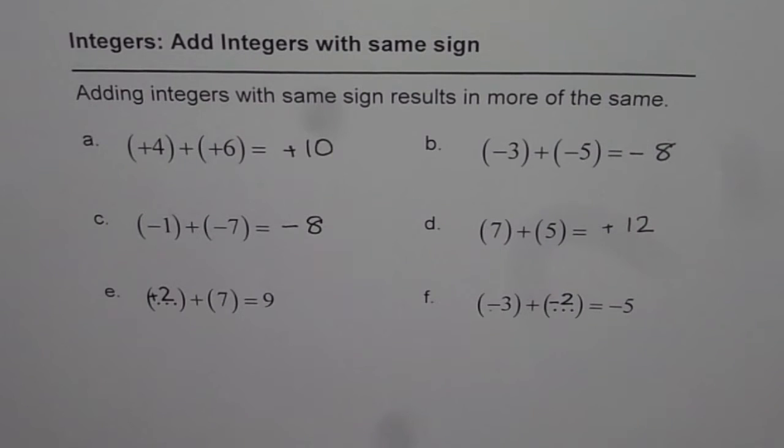I hope you understand now the principle. It is when you add integers with the same sign, it results into a bigger integer as far as the value is considered and the sign remains the same. So we get more of the same. So that is what is the key to understand how to add integers. I hope that helps. Thank you.